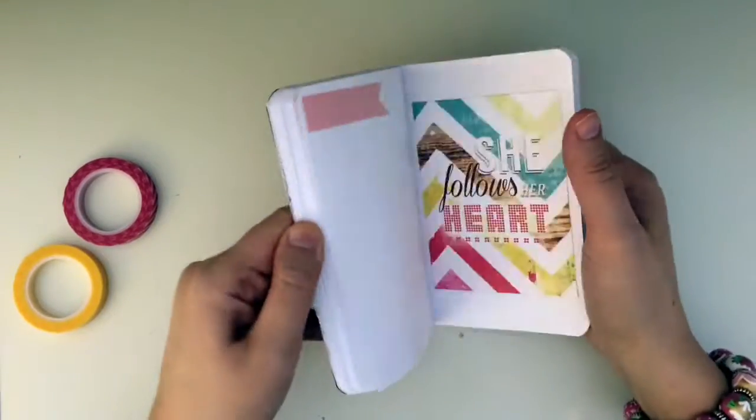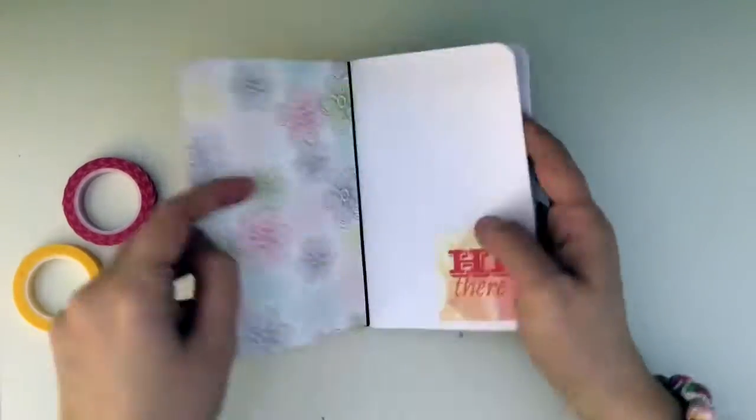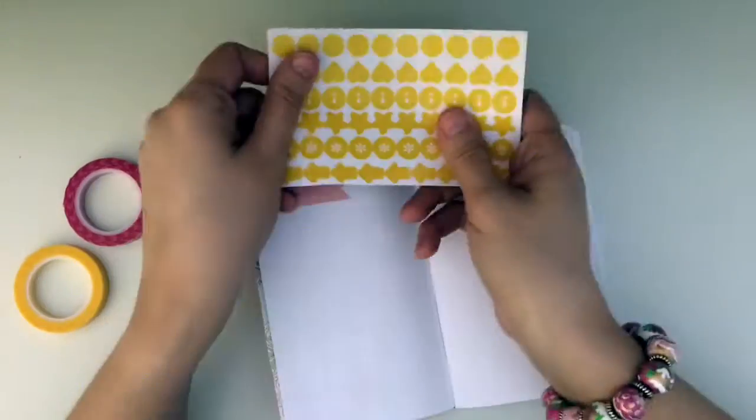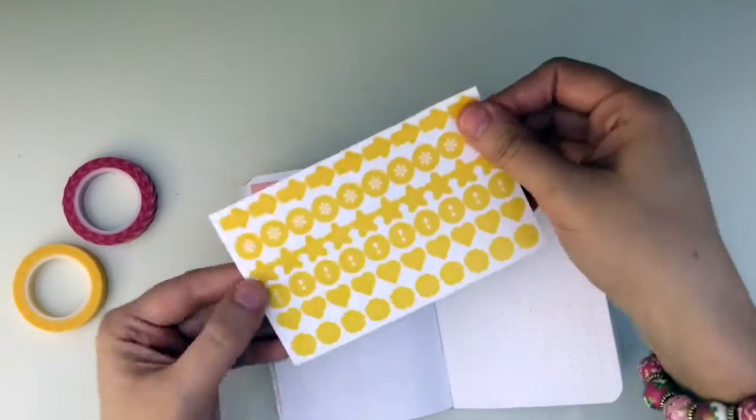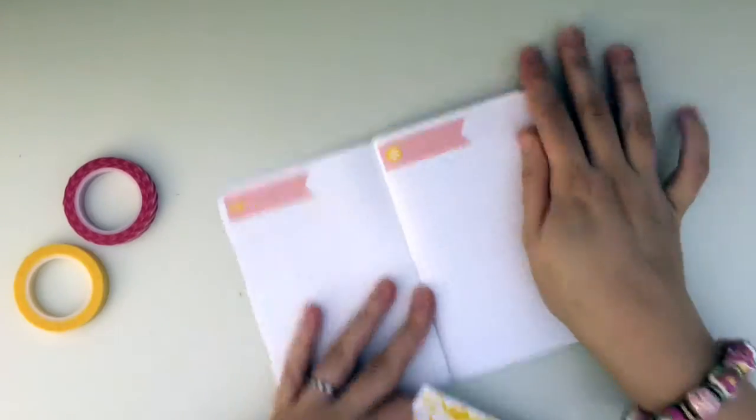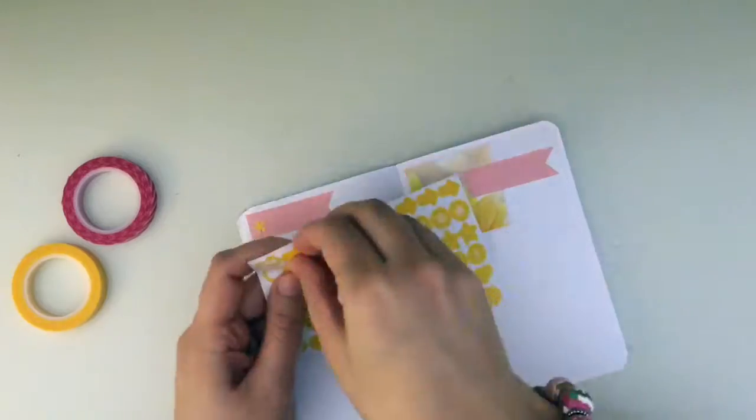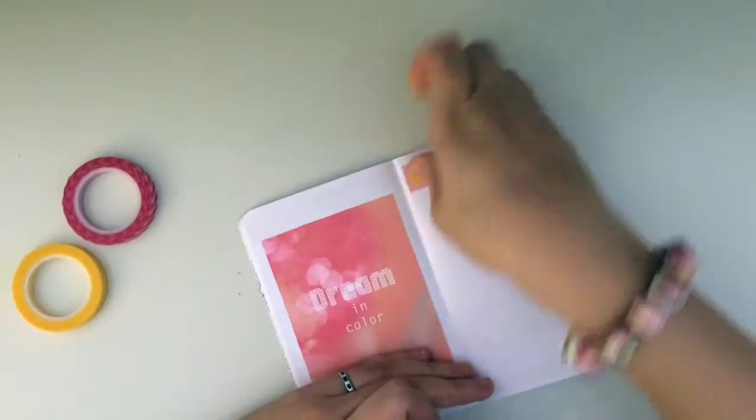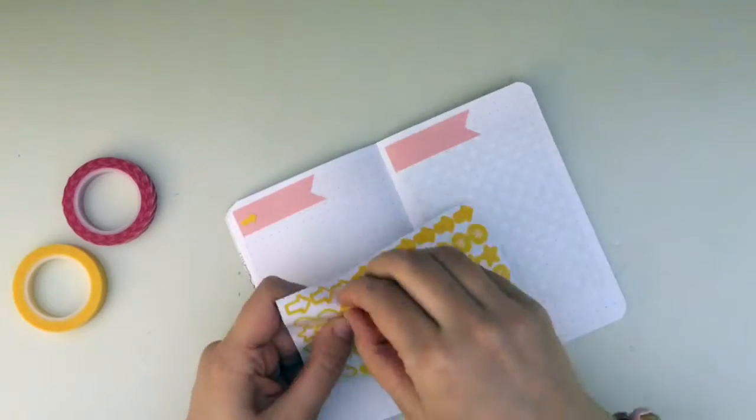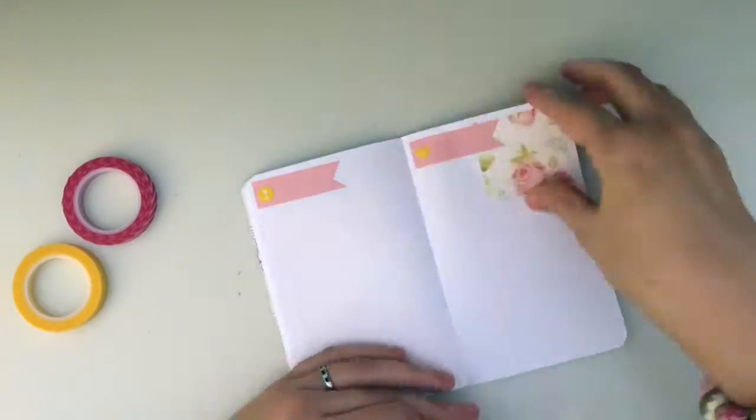So my bullet journal is large enough for me to have about a month, maybe just a little bit more than a month's worth of days. I have these great yellow stickers. They're just tiny little icons and I thought they would be perfect on the flags where I'm going to write the dates. So there's stars and arrows and little asterisks and exclamation points. Super cute.